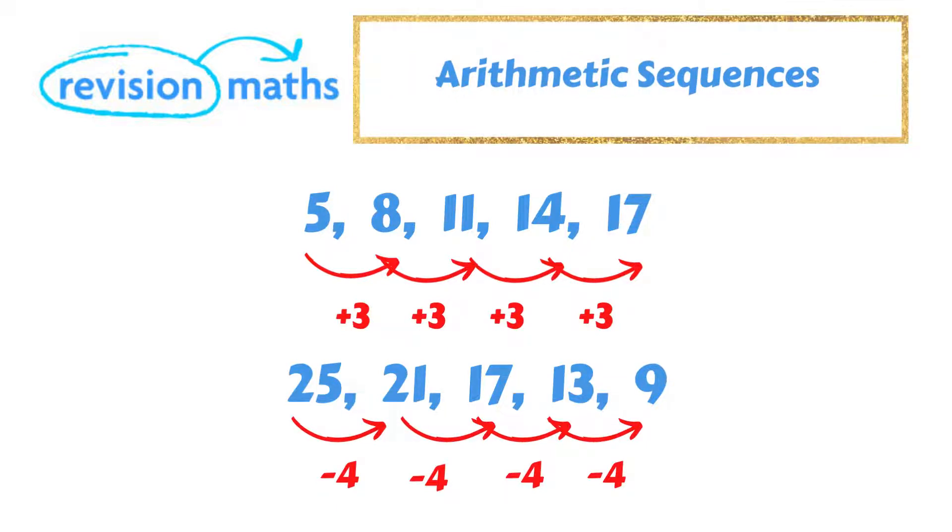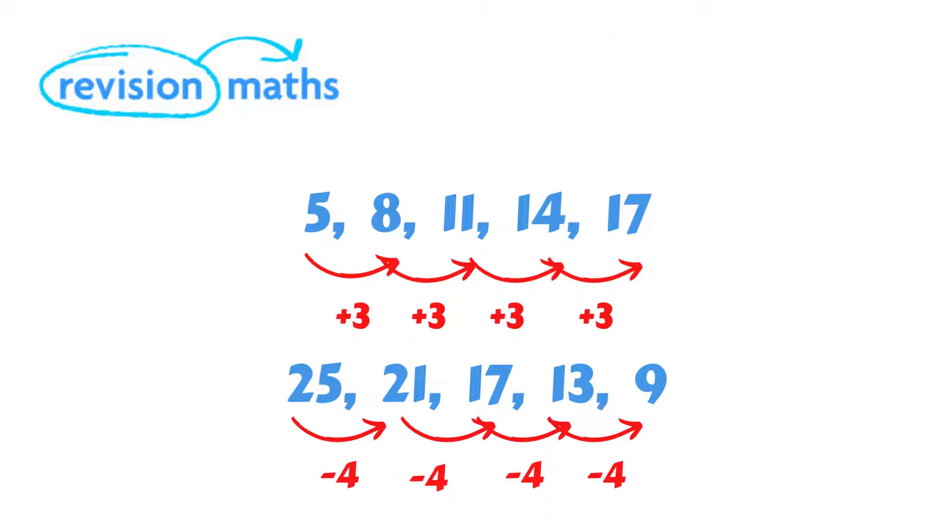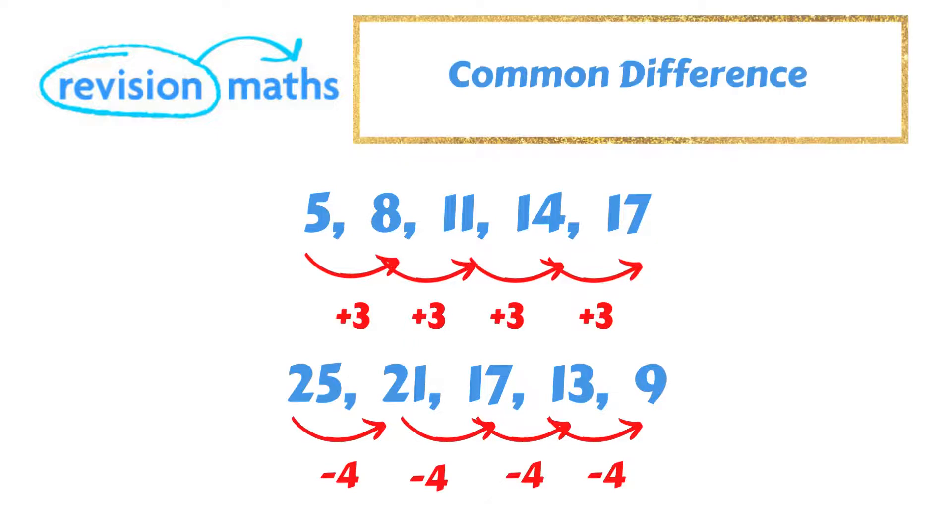The two examples I have shown you where we are either adding or subtracting a certain amount each time are called arithmetic sequences. These sequences can be identified as we are adding or subtracting by the same amount each time. In maths, we call the number they change by the common difference. For the bottom sequence, as the common difference is negative, we would describe the common difference of minus 4 as being added each time.